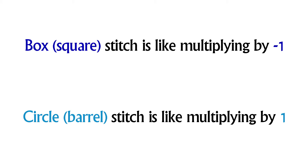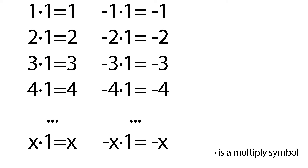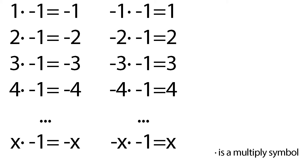A box stitch is like multiplying by minus 1, and a circle stitch is like multiplying by 1. As you know from school, any number times 1 will be the same number — a positive times 1 stays positive, and a negative times 1 stays negative. Minus 1 gives the opposite: a positive times minus 1 becomes negative, and a negative times minus 1 becomes positive.